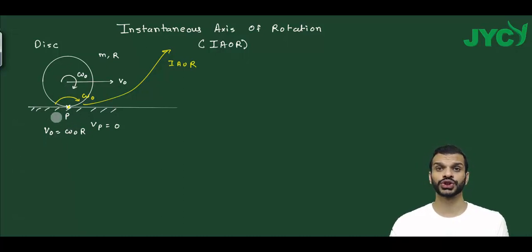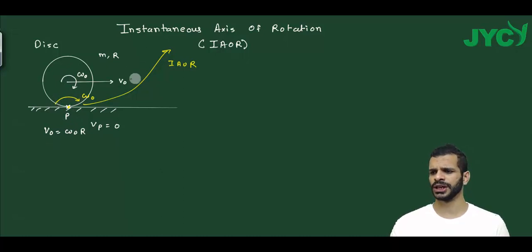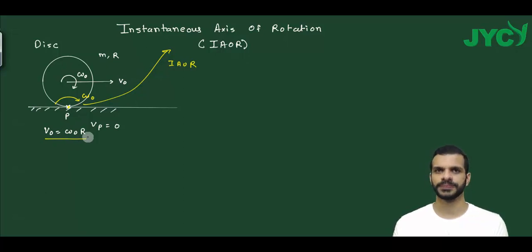Let's check it. The velocity V_0 is equal to omega_0 into R.